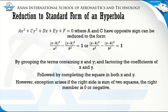A general equation of a hyperbola can be written into either of these standard forms. To reduce the general equation to standard form: first, group the terms containing x and y; next, factor out the coefficients of x² and y²; then complete the square in both x and y where applicable. An exception arises if the right-hand side is a sum of two squares denoting a circle, or if the right member is zero or negative.